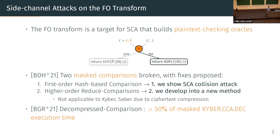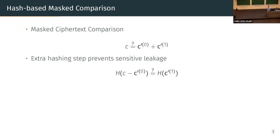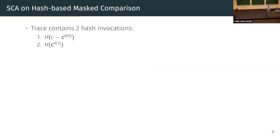Starting with the hash-based comparison: we are trying to compare the submitted ciphertext with the re-encrypted ciphertext, where the re-encrypted ciphertext might be split into two arithmetic shares. We include an extra hashing step to prevent leaking whether the inputs differ in only a small bit of a single coefficient or are completely different. Ideally you want hashing to spread these differences very quickly, but as we'll see, that is exactly what is not the case and what we exploit in our attack.